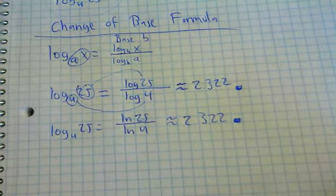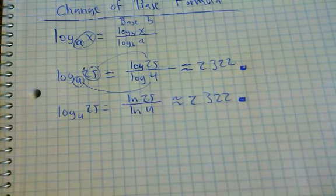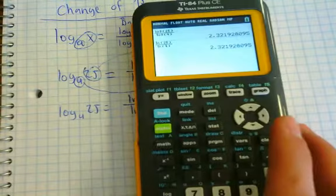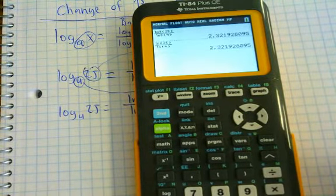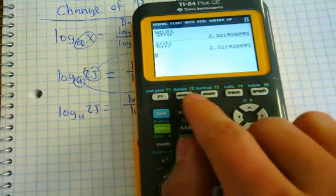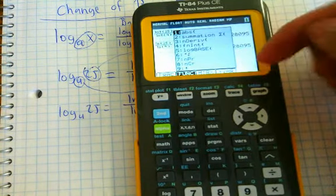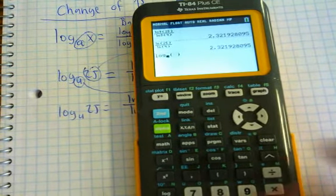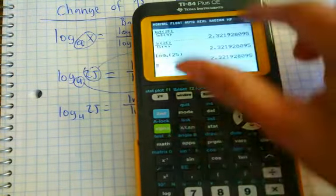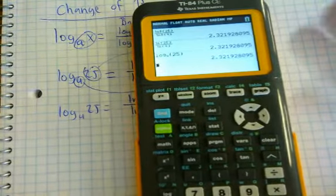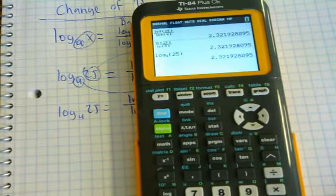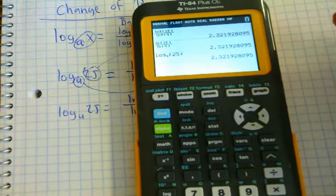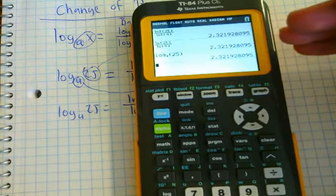Now, some of you may be aware of this — these calculators now have software that can handle anything. You can actually handle this problem exactly how it looks. If you hit alpha and then window, it brings up a menu. Option number 5 says 'log base.' If you hit enter, it allows you to input any base you want. So we can say base 4 and then 25, and if we hit enter, notice we get the same answer. You can get any type of logarithm on the calculator. Now, if you're in my class, I will expect you to know how to change the base — so please don't disregard the change of base formula. Make sure you can do both.